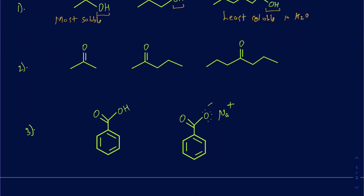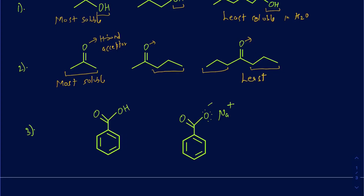In this next example, the oxygen acts as a hydrogen bond acceptor, and you have a very similar scenario across all three structures. The difference again is the carbon chain — a smaller carbon chain on the left, getting bigger moving from left to right. Same story: the one with the smallest chain is the most soluble, and the one with the biggest chain is the least soluble in water. If you have to determine solubility in non-polar solvents, it's just the opposite.